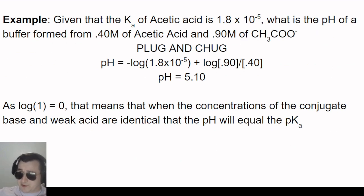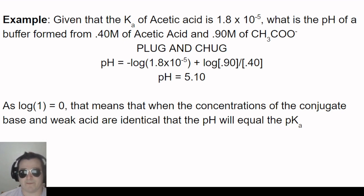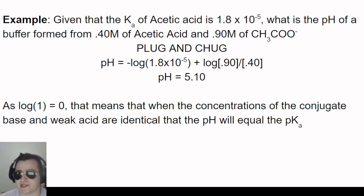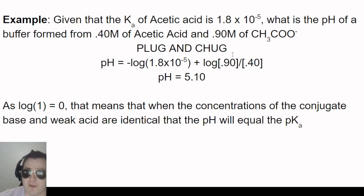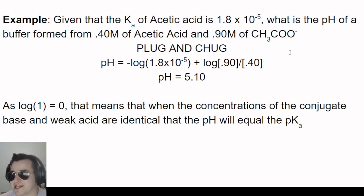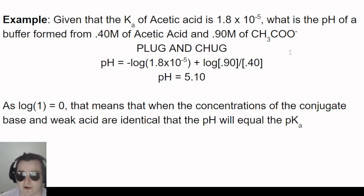Here's a very basic example. The Ka of acetic acid is 1.8×10⁻⁵. What is the pH of a buffer formed from 0.40 M acetic acid and 0.90 M of its conjugate base? Remember: it's always conjugate over original form. We put conjugate base (0.90 M) over weak acid (0.40 M) in the Henderson-Hasselbalch equation. If given milliliters or moles instead of molarity, you'd need to calculate molarity first. The result is pH = 5.10.